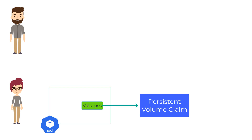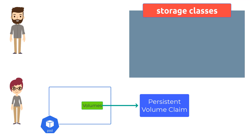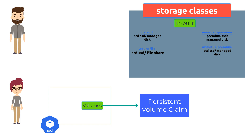Now that the persistent volume claim is created, it will start looking for a storage class. In AKS, we have certain inbuilt storage classes. First, default — the default storage class creates a standard SSD-based managed disk. If you don't specify any storage class, this is the storage class that the persistent volume claim will try to use. This is why it is important in static provisioning mode to define the annotation — because if you did not, it will automatically take the default storage class instead of a persistent volume from the existing pool. Then we have managed-premium, which creates a premium storage-based managed disk; Azure File, which creates a standard SSD-based file share; and Azure File Premium, which creates a premium storage-based Azure file share.